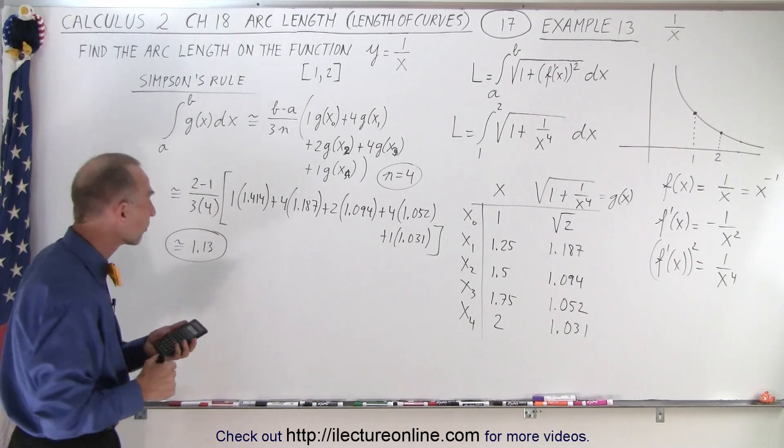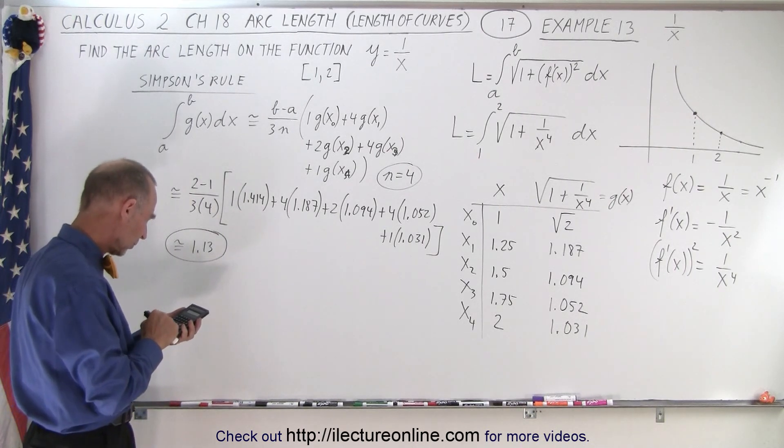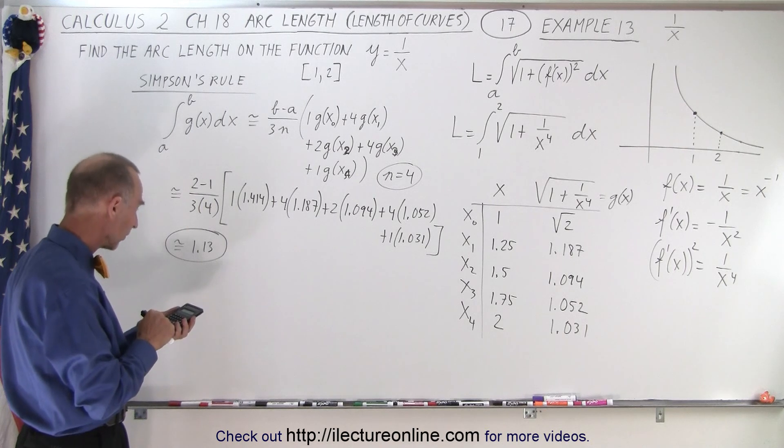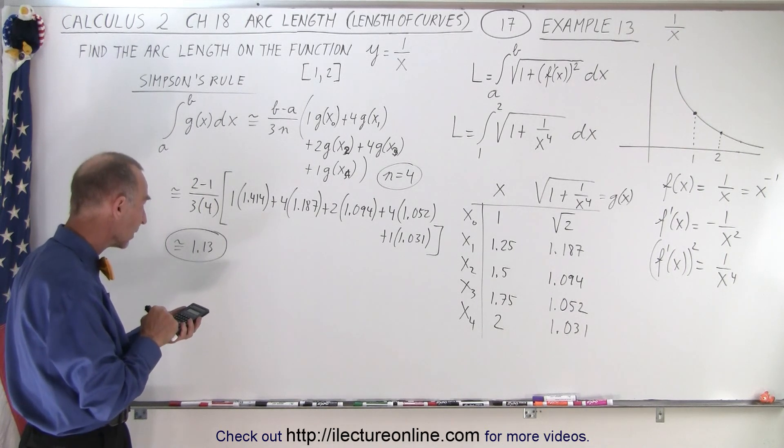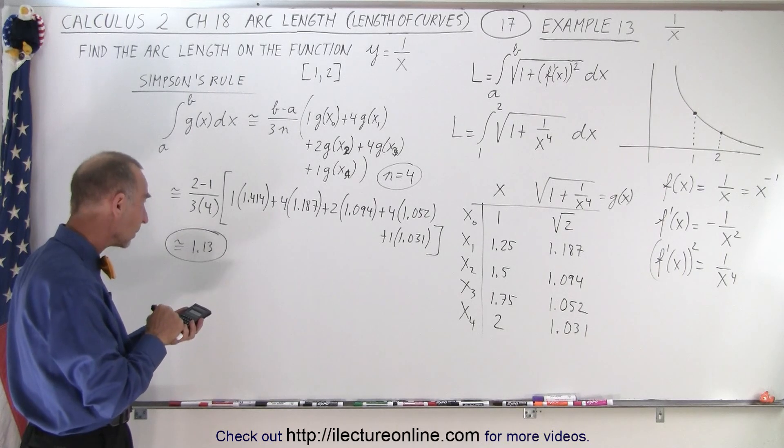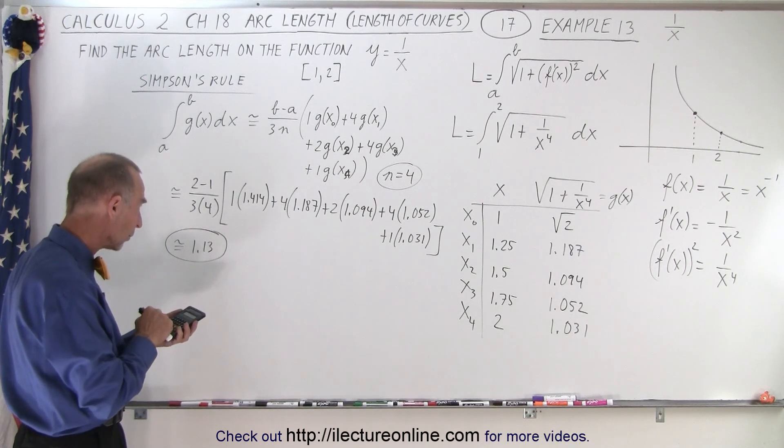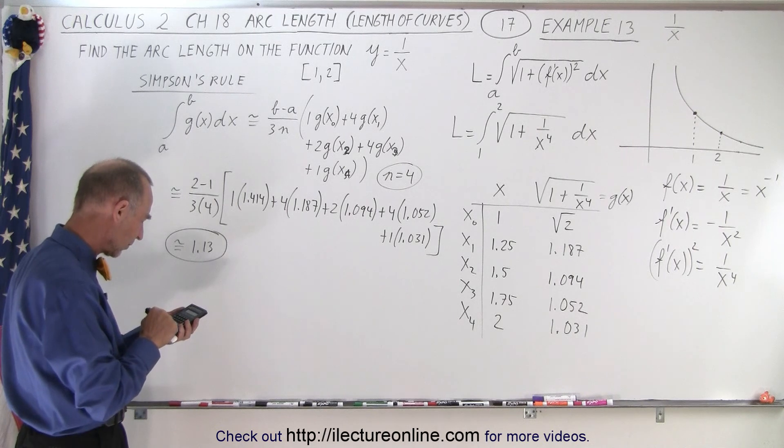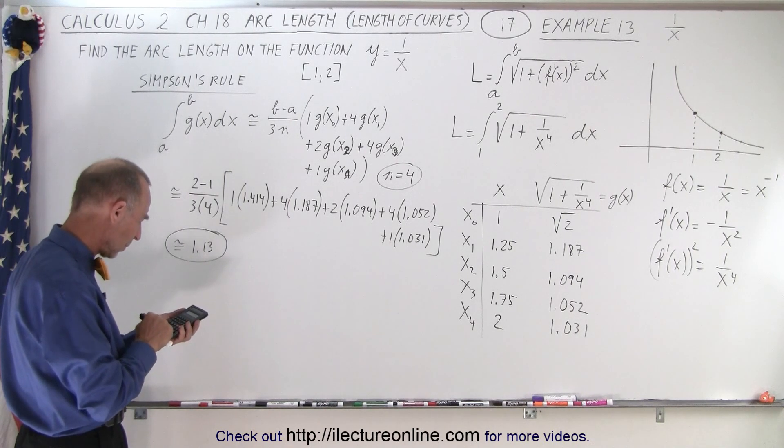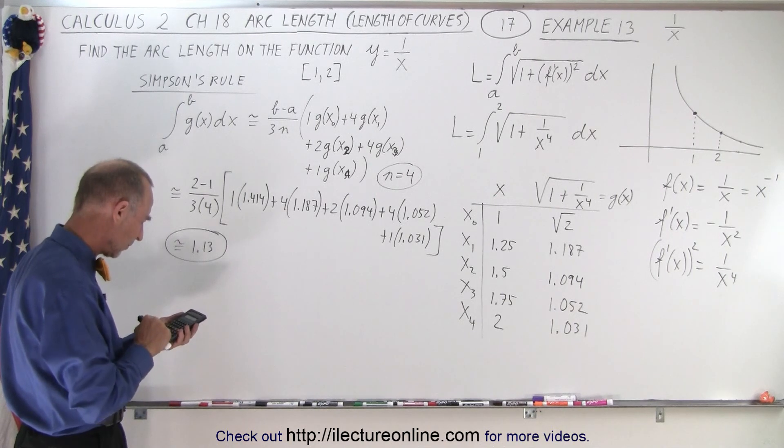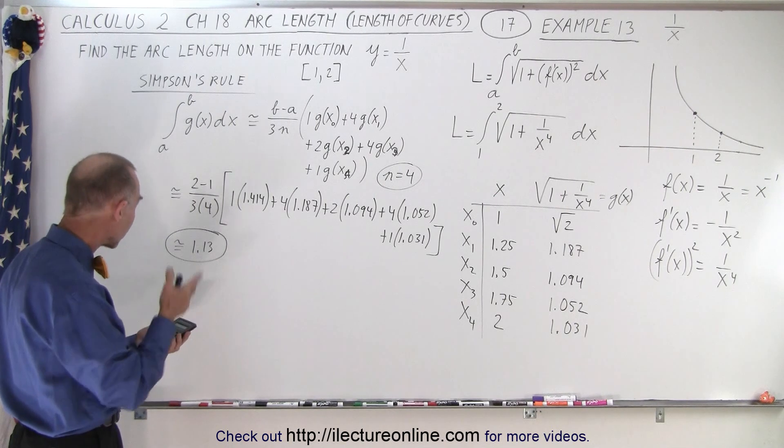Let me try one more time just to make sure I didn't make any mistakes. 1.414 plus 4 times 1.187 plus 2 times 1.094 plus 4 times 1.052 plus 1.031 equals divided by 12. And we get 1.13.